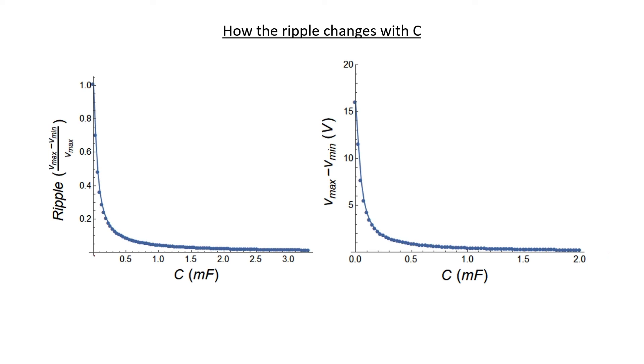As the capacitor gets larger and larger, the ripple starts to fall and approaches zero with very large capacitors. We can also express the ripple as just a voltage difference, maximum voltage minus minimum voltage, and we see the same effect over here.